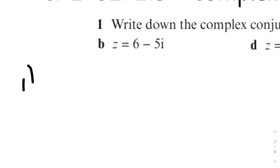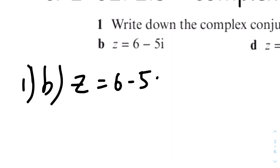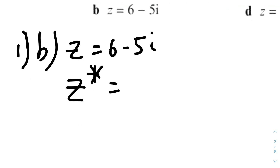So we know Z equals 6 minus 5i. Therefore the conjugate of Z will be just the same term, but the symbol before the imaginary unit will have the opposite symbol. Here we have minus 5i, so the conjugate will be plus 5i. Therefore the conjugate of Z will be 6 plus 5i.